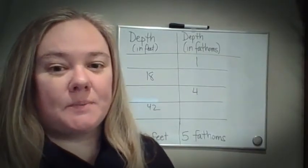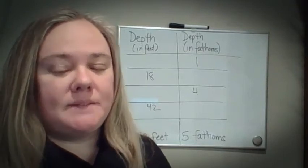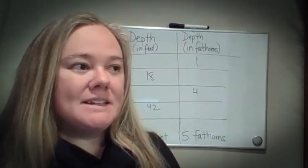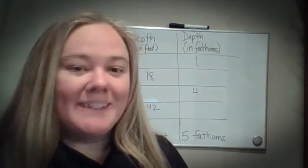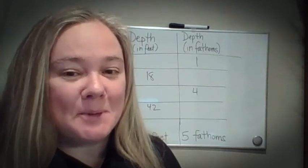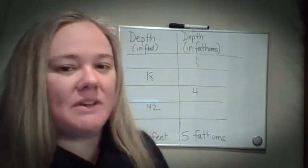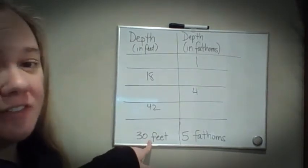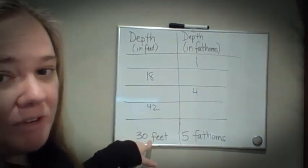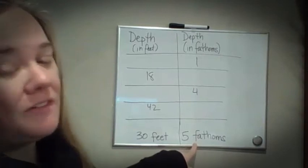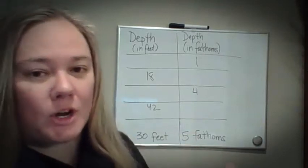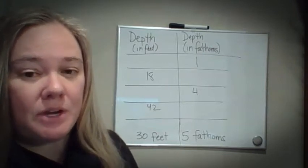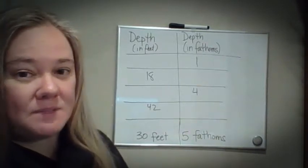So we were given the information about Julie and her sea anemone exploration. With the information we were given, we know that 30 feet deep is called five fathoms when talking about water. So we know for certain that's our ratio — 30 feet is five fathoms.